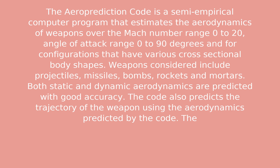The error prediction code is a semi-empirical computer program that estimates the aerodynamics of weapons over the Mach number range 0 to 20, angle of attack range 0 to 90 degrees, and for configurations that have various cross-sectional body shapes. Weapons considered include projectiles, missiles, bombs, rockets, and mortars.